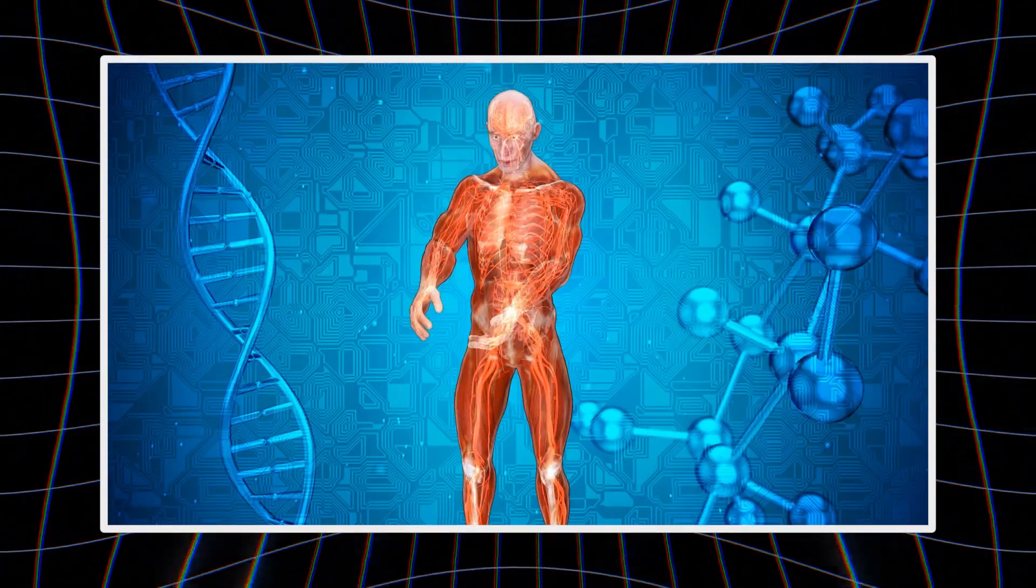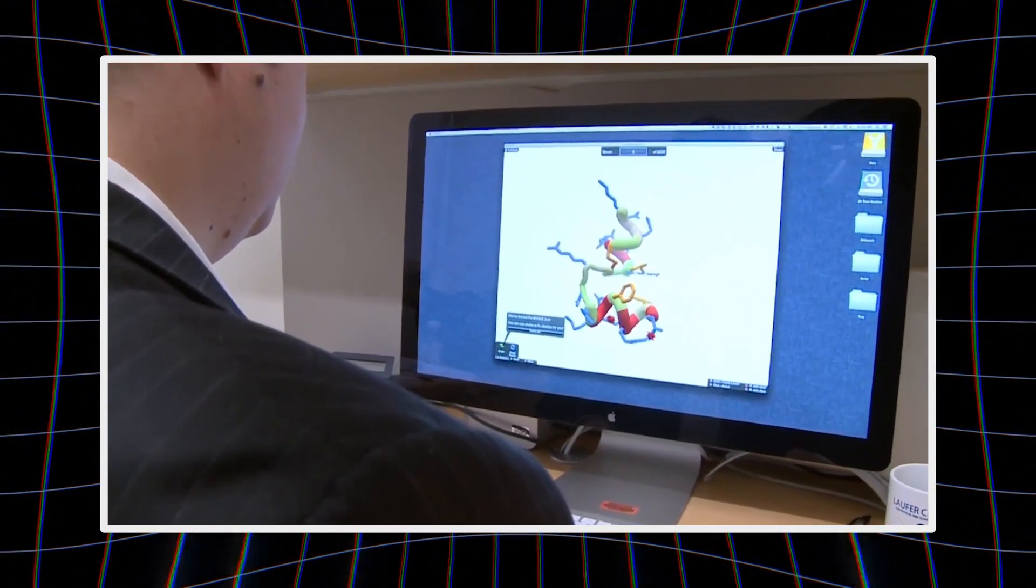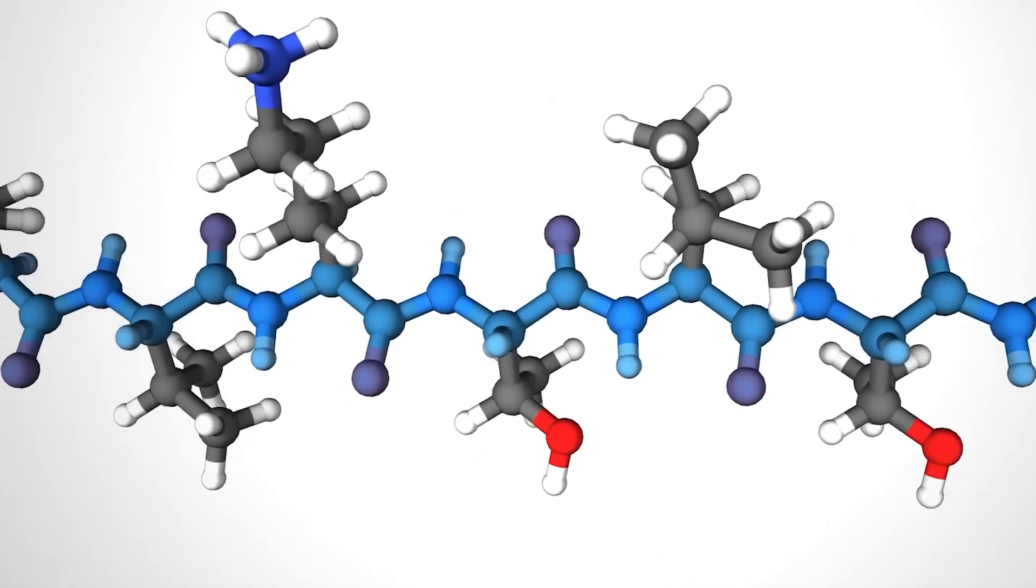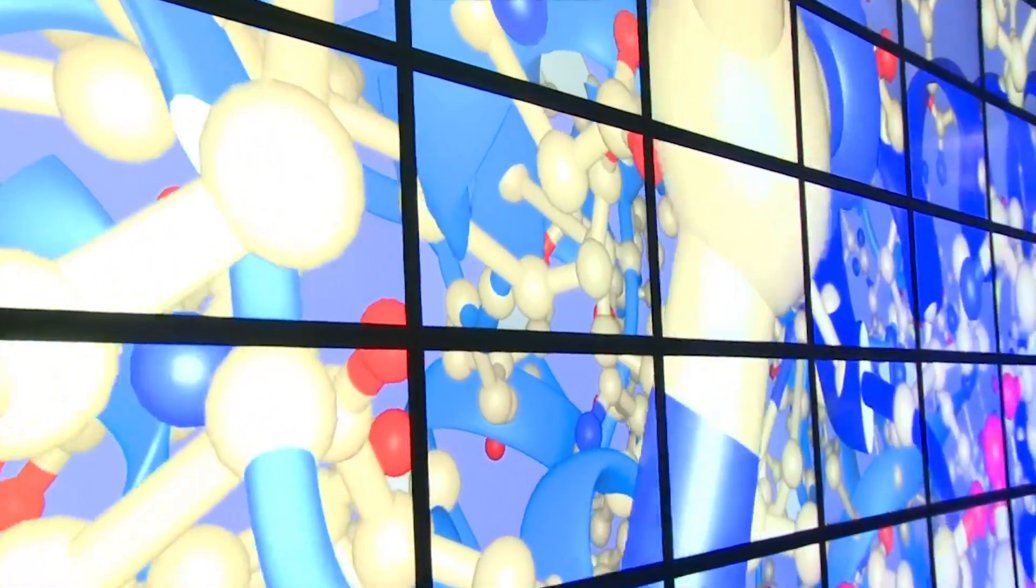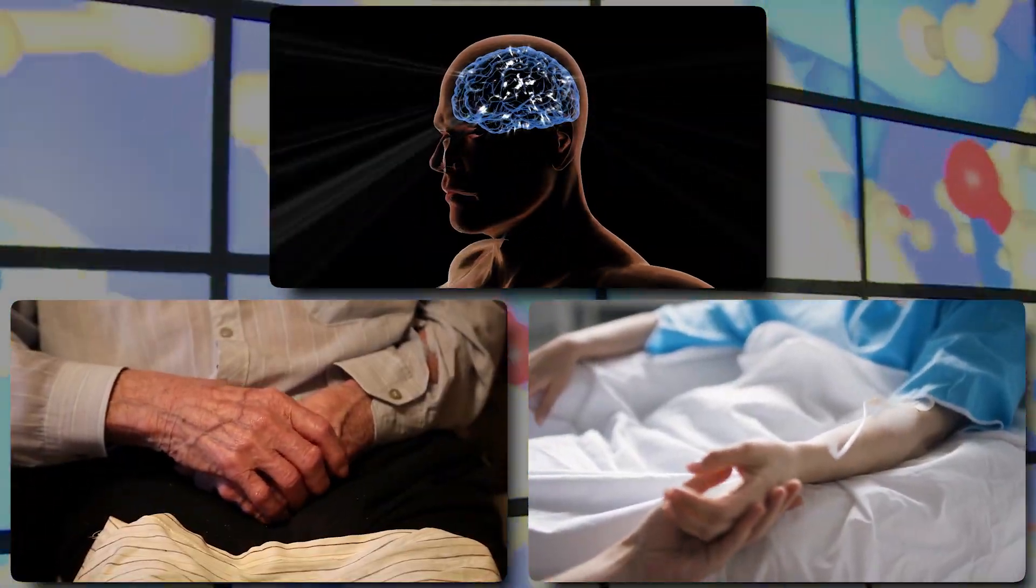Every protein in your body, and there are millions of them, folds into a specific 3D shape. That shape determines everything the protein does. Get the shape wrong, and you get diseases like Alzheimer's, Parkinson's, or cancer.